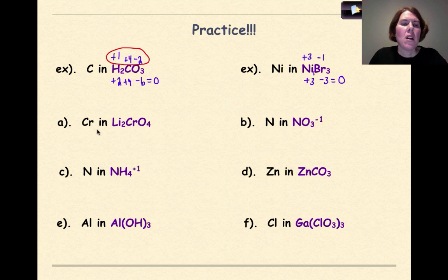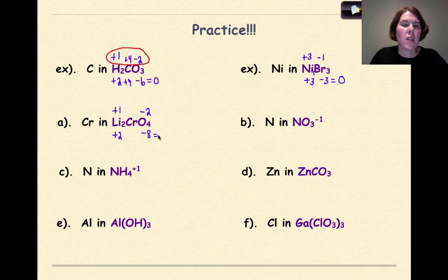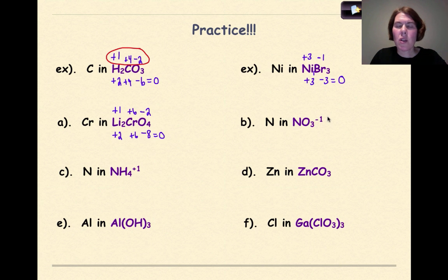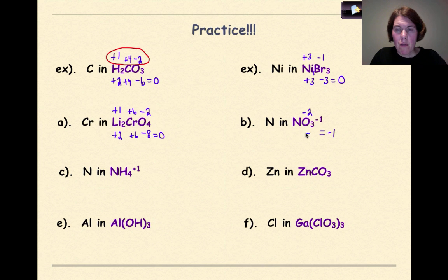Welcome back. Answer A: chromium in Li2CrO4. Lithium is plus 1; plus 1 times 2 gives plus 2. Oxygen is minus 2; minus 2 times 4 gives minus 8. For the compound to equal 0, chromium must be plus 6. Answer B: nitrogen in NO3 minus. This is the nitrate polyatomic, so the total must equal minus 1. Oxygen is minus 2; minus 2 times 3 gives minus 6. For the result to be minus 1, nitrogen must be plus 5, because plus 5 minus 6 equals negative 1.